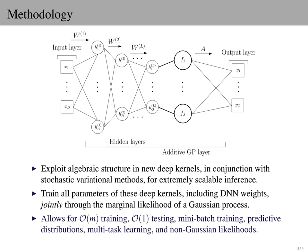Specifically, we propose new deep kernels and exploit the algebraic structure of these kernels in conjunction with stochastic variational inference. We train all the parameters of these deep kernels, including all the weights of the deep neural network, jointly through the marginal likelihood of the Gaussian process. The resulting approach is highly scalable and enables classification and other non-Gaussian likelihoods, as well as multi-task learning and mini-batch training, which are not normally available for Gaussian processes.